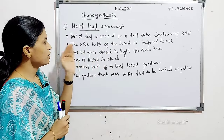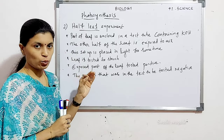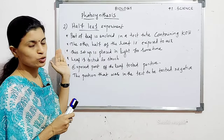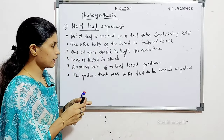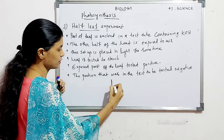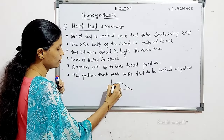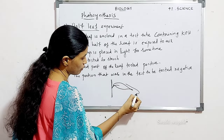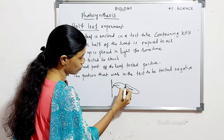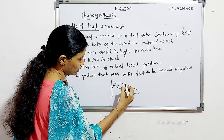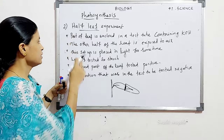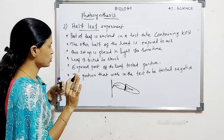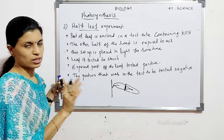Next, in the half leaf experiment: part of the leaf is enclosed in a test tube containing KOH — potassium hydroxide — and the other half of the leaf is exposed to air. This setup is placed in light for some time, and then the leaf is tested for starch.